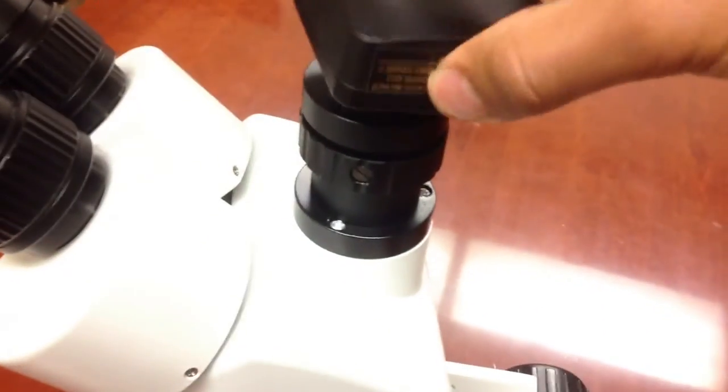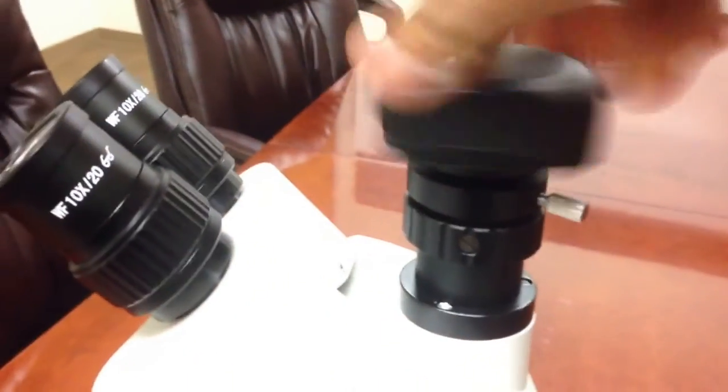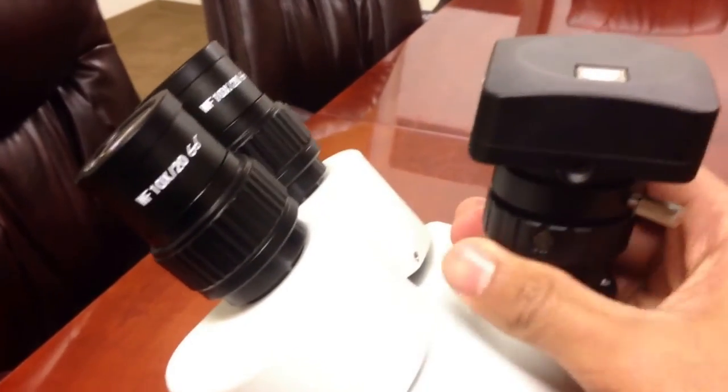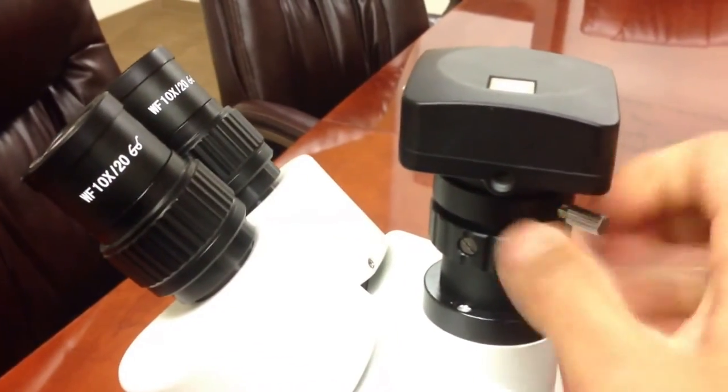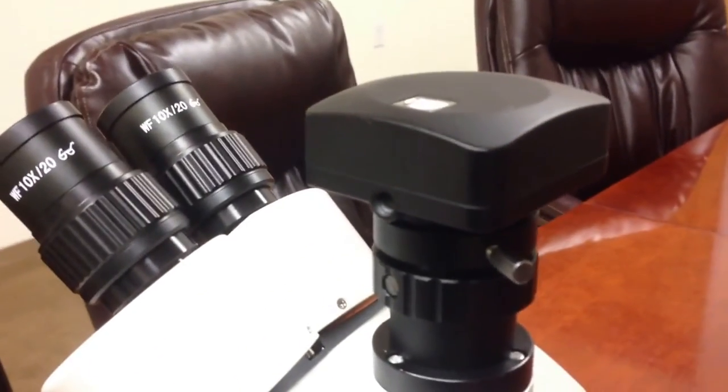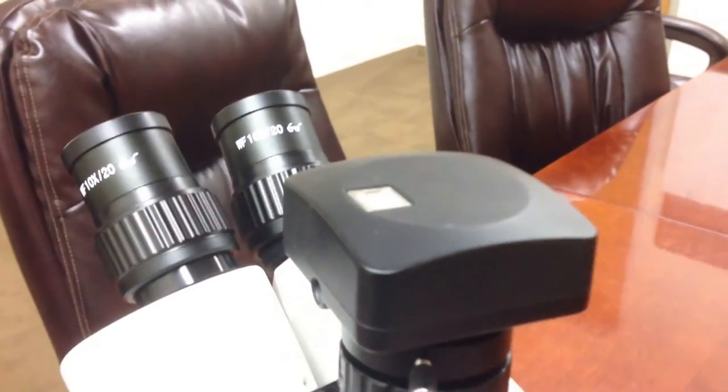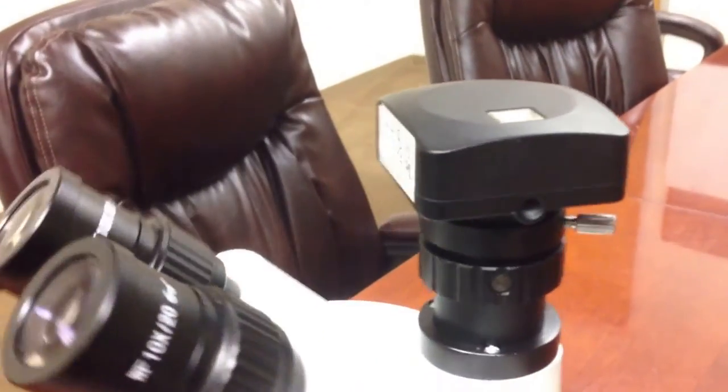And you go ahead and screw this onto the adapter on top. Just like this. And make sure those two are secure. And there you go. You have the ADC20 attached to the MU series camera. But again, this will also work for the MT and MA series camera.